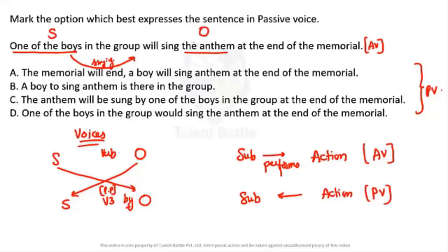The anthem comes to the subject's place: 'The anthem will be sung.' The V3 form of 'sing' is 'sung.' Then 'by one of the boys in the group' at the end. So option C is the answer. No need to read every sentence — just check that 'sing' is converted to 'sung,' and the only option containing 'sung' is option C.